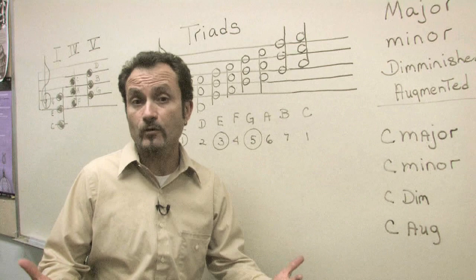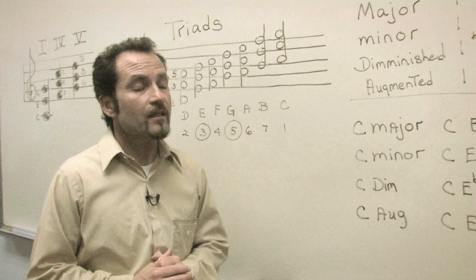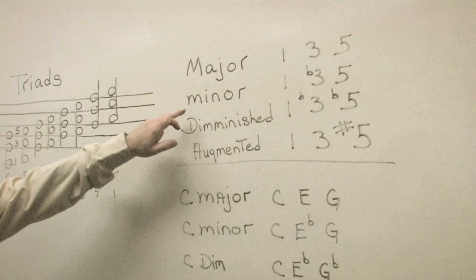There are four main different types of triads that we will discuss, which are major, minor, diminished, and augmented.